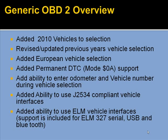For generic OBD2, every year we update all the vehicles and add new modes and features to keep the generic OBD2 up to date. New items include a permanent DTC mode that we added. We changed the screen so you can enter odometer and vehicle numbers and track that per vehicle. We've also added the ability to use J2534 competitive vehicle interfaces, as well as all of the ELM vehicle interfaces out there. So if you've got an ELM 327 series interface — whether it's serial, USB, or Bluetooth — you can now run our generic scan tool with those other vehicle interfaces.